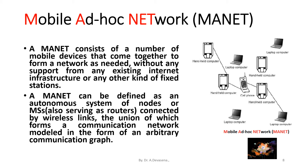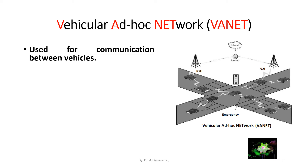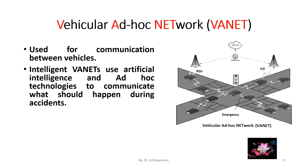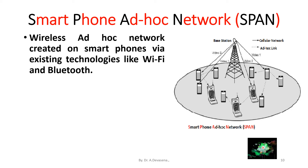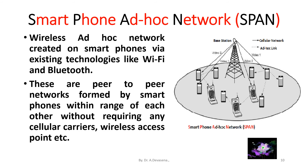A MANET can be defined as an autonomous system of nodes or mobile stations, also serving as routers, connected by wireless links forming an arbitrary communication graph. Vehicular ad hoc network (VANET) is used for communication between vehicles. Intelligent VANETs use artificial intelligence and ad hoc technologies to communicate, such as what should happen during accidents. This network is formed by communication between moving vehicles and roadside devices. Smartphone ad hoc network is a wireless ad hoc network created on smartphones via existing technologies like Wi-Fi and Bluetooth — peer-to-peer networks formed by smartphones within range of each other without requiring cellular carriers or wireless access points.